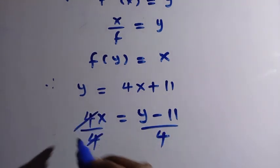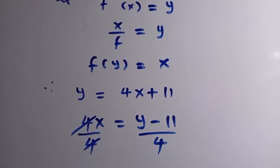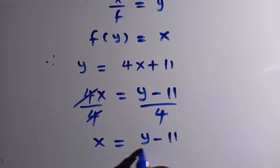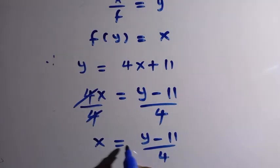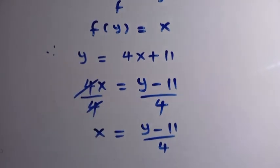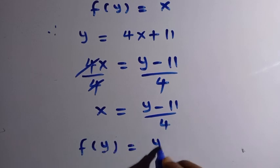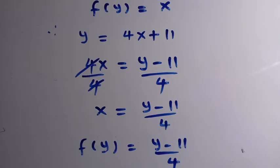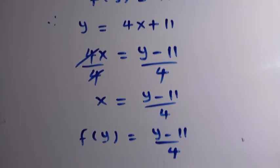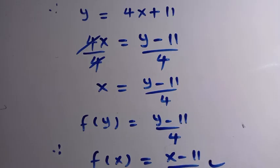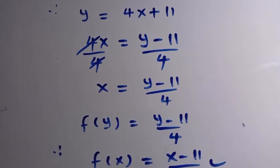Dividing both sides by 4, step by step, we get x equals (y minus 11) divided by 4. But x is f of y from the relation above, so f of y equals (y minus 11) over 4. Replacing y with x, we get f of x equals (x minus 11) over 4. This is the solution from Method 1.